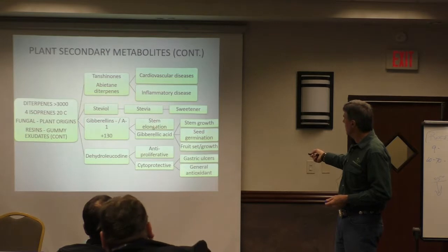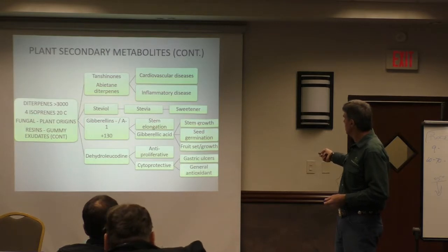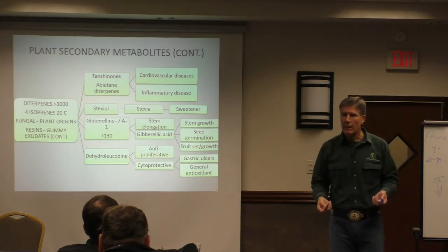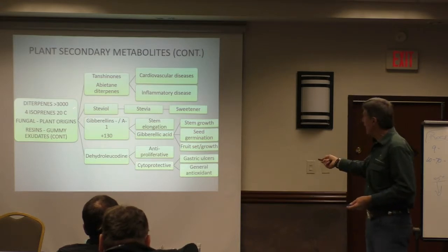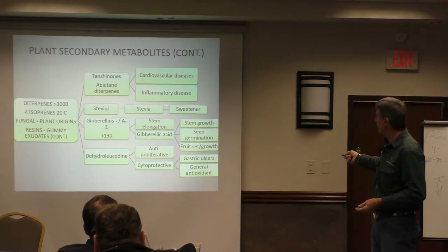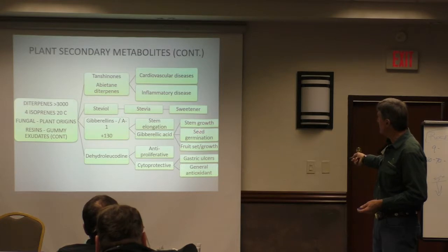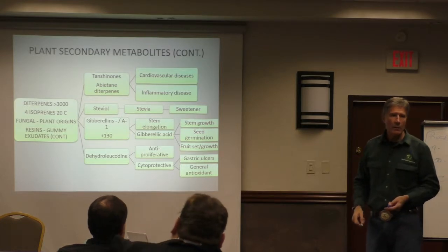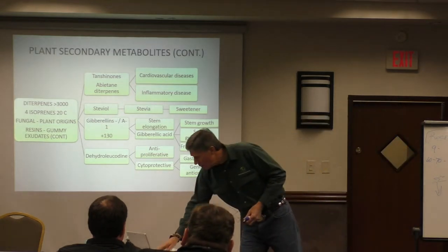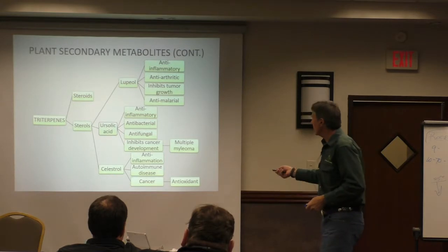Gibberellin - stem elongation, stem growth, seed germination, fruit set. Now we're starting to come back and look at the terpenes. These diterpenes are affecting our stem elongation in our wheat, our seed germination, our fruit set and growth. These plant secondary metabolites are driving all of these functions and doing all this stuff.